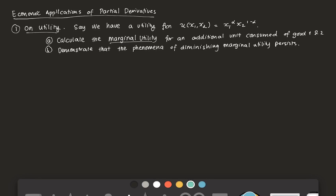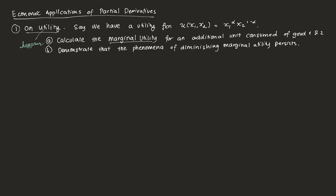In economics, utility is some measure of happiness. Ideally, you would want more and more utility so the consumer becomes happier. Utility is some function of consumption — in particular, the consumption of certain goods. Say we have two goods, x1 and x2, and we define a utility function given as x1 raised to alpha and x2 raised to 1 minus alpha, wherein alpha lies between 0 and 1. One application of partial derivatives is getting the marginal utility of each good, and also proving the phenomenon of diminishing marginal utility.